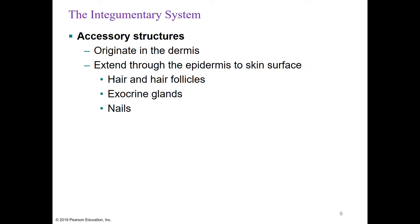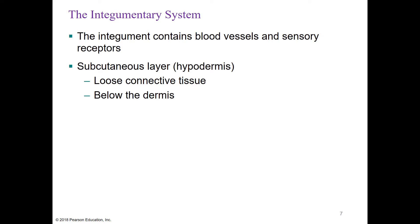The accessory structures originate from the dermis, which is the deeper layer, and extend through the epidermis to the skin surface. They include hair and the follicles for the hair, exocrine glands—those are glands that secrete products through a duct, which we also talked about in Chapter 4—and then nails. The integument or skin contains blood vessels and sensory receptors, so we can feel through our skin. Under the skin or cutaneous membrane, we have the subcutaneous layer, known as the hypodermis, made of loose connective tissue, a lot of fat or adipose, found below the dermis.